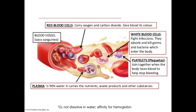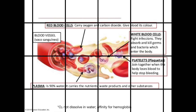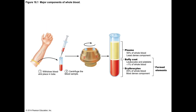Plasma also contains globulins that are important in transporting lipids and fat-soluble vitamins. The cellular, or solid components, are referred to as the formed elements of the blood — that is the red blood cells, white blood cells, and platelets.